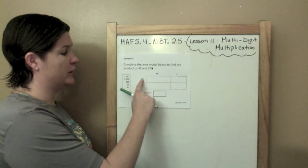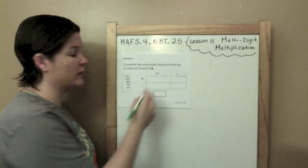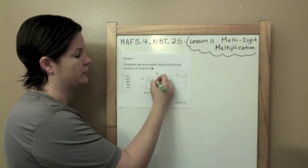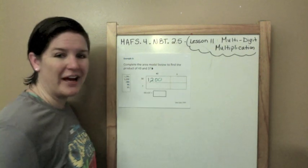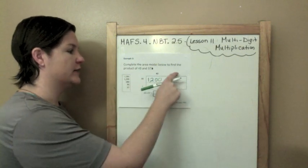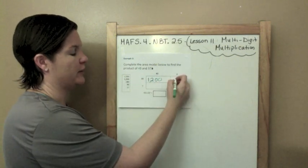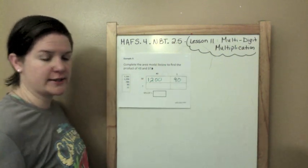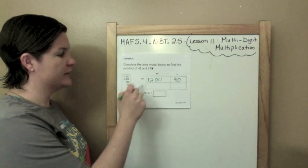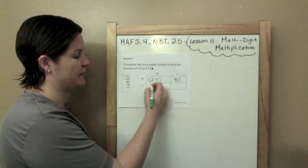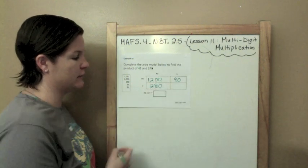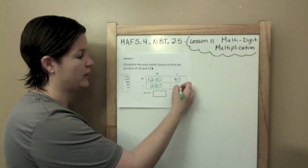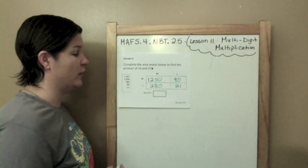So 30 times 40 would be 3 times 4, which is 12. We've got 1, 2, 0. So we're going to plug in those 0s. That's 1,200. 30 times 3 goes in this box. That would be 3 times 3, which is 9. And then add my 0 onto the end. That's 90. 7 times 40 would be 7 times 4, which is 28. Add my 0. 7 times 3 is 21. Now I add them all up.